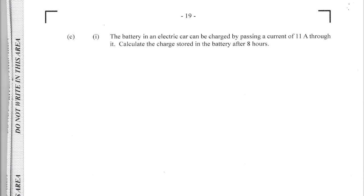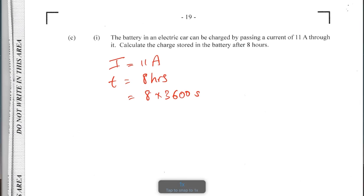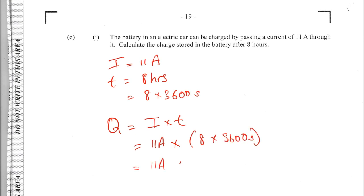Question CI: a battery in an electric car is charged by passing a current of 11 amps through it. Calculate the charge stored after 8 hours. Converting time: 8 × 3600 = 28,800 seconds. Using Q = I × t: Q = 11 × 28,800 = 316,800 coulombs.